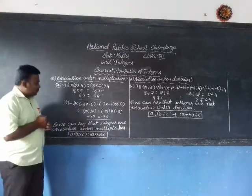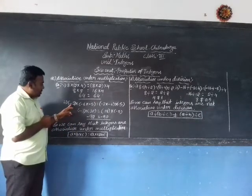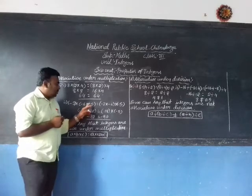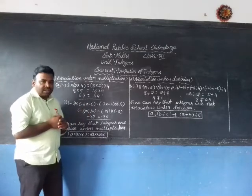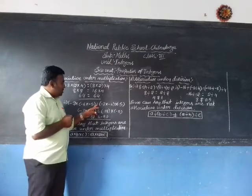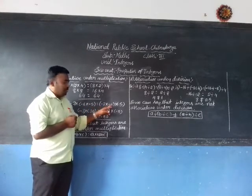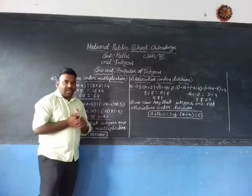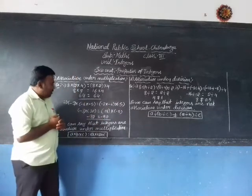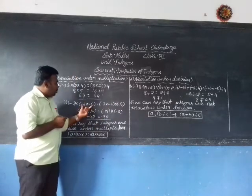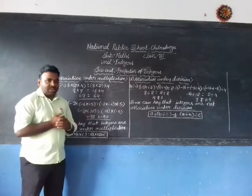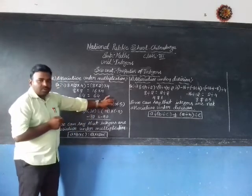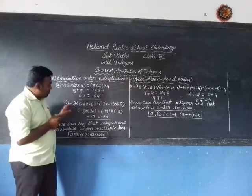Second example: (−3 × −6) × −5 = −3 × (−6 × −5). Here the grouping of the operands is changed. Now use the order of operations to solve this problem.